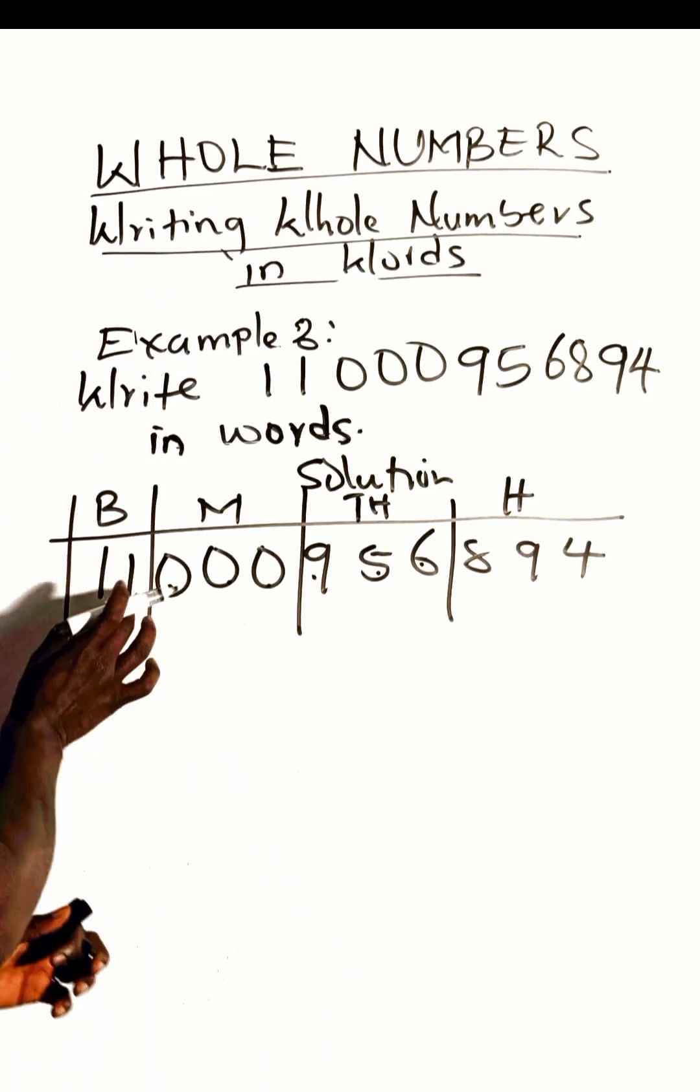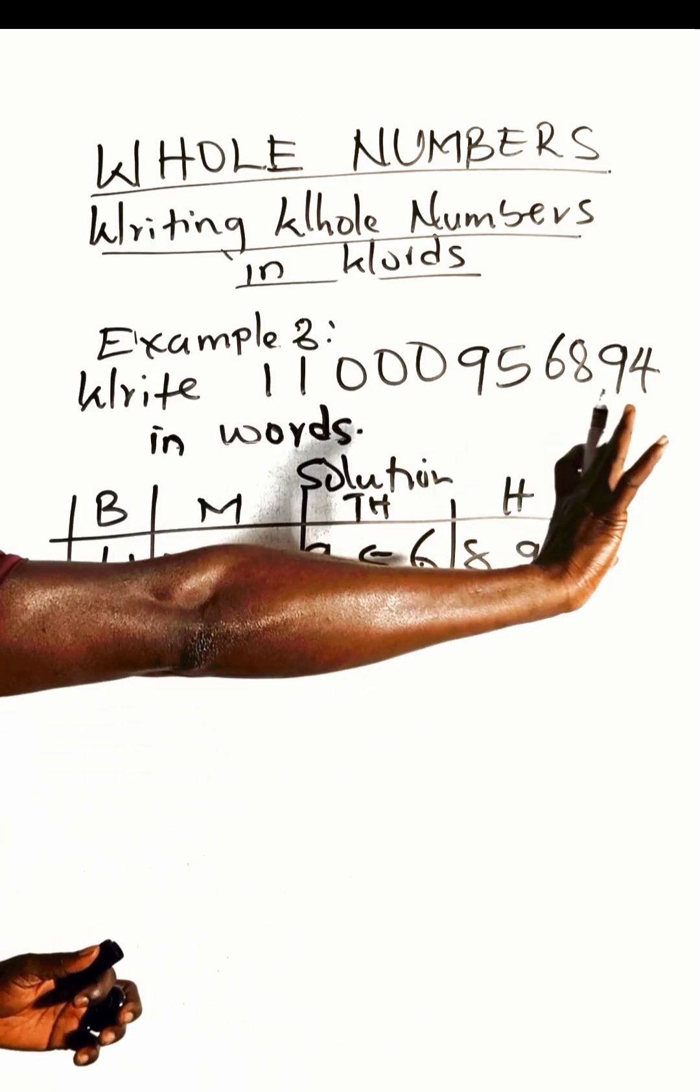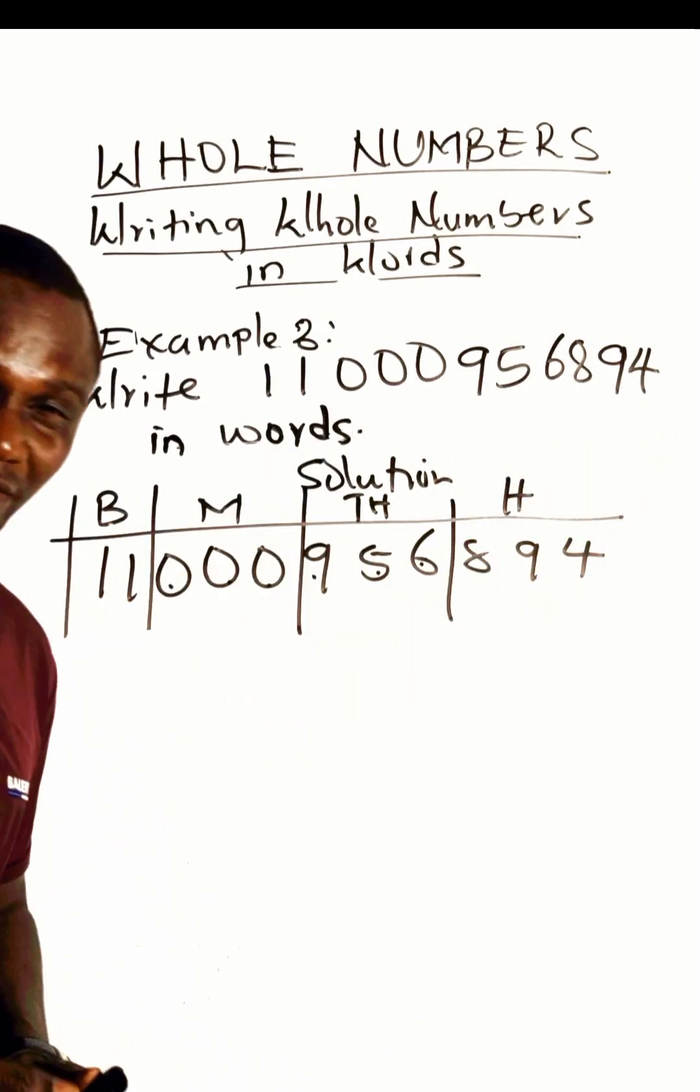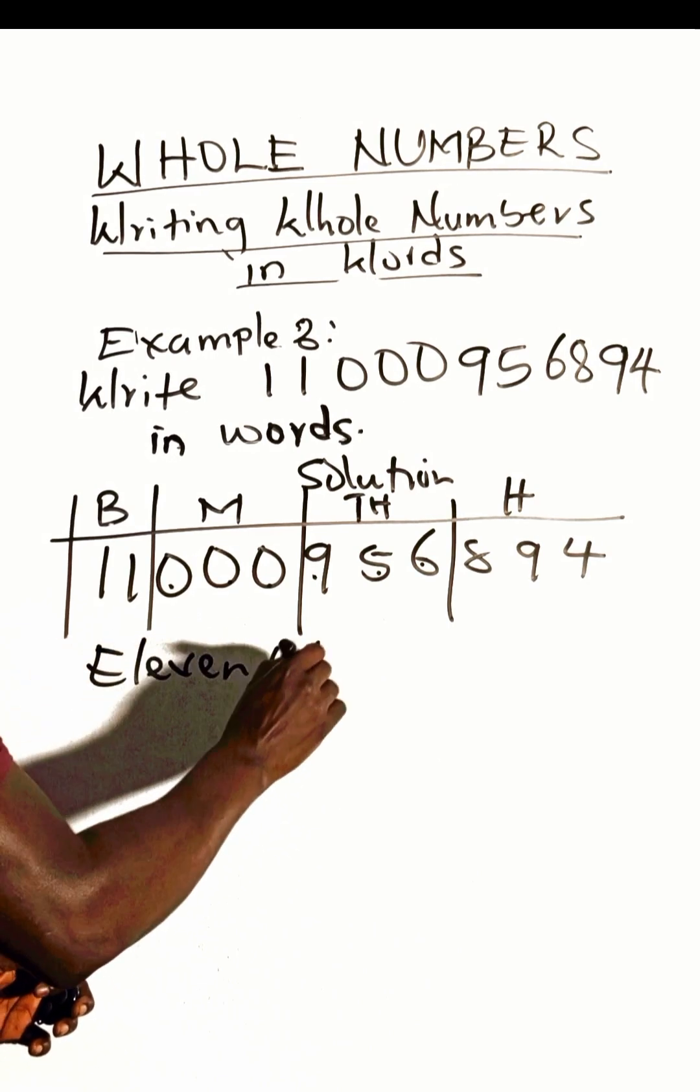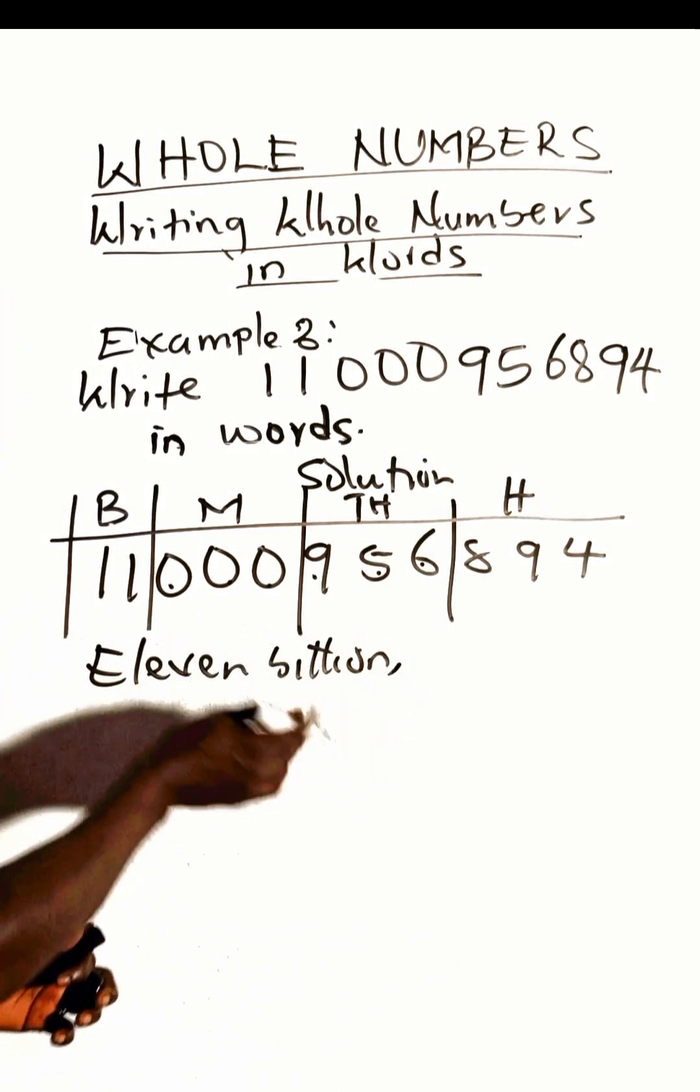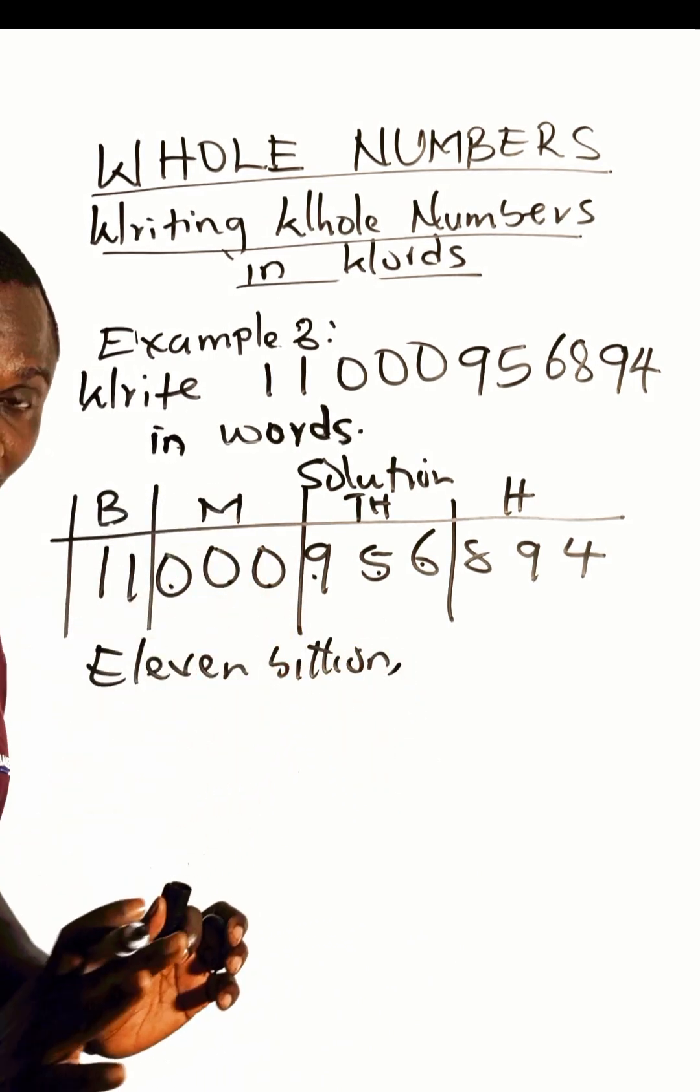Under the billions we have just 11, so we write 11 billion, right? Comma. Then your millions—nothing is there, so skip.